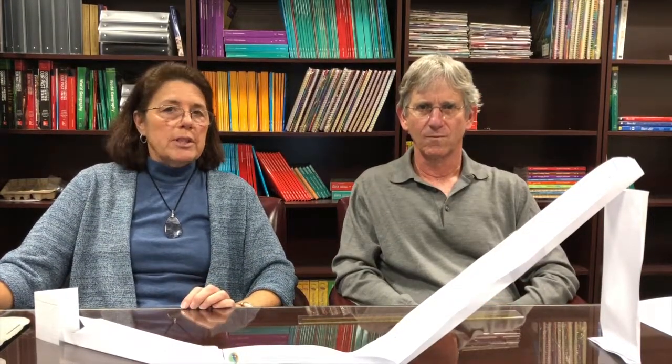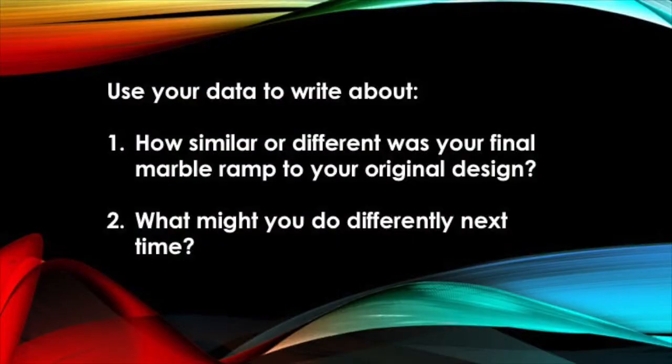Lastly, students will answer some questions as they write about this investigation. For example: What factors influenced the distance the sail traveled? What type of energy were you observing? There's also thinking about the engineering design process: How similar or different was your marble ramp to your original design? What might you do differently next time? They should also demonstrate an understanding that energy can be transferred from object to object through collisions. A lot of this has real life applications for students when they're riding on a skateboard, a bicycle, or in cars to understand momentum and collision impact.